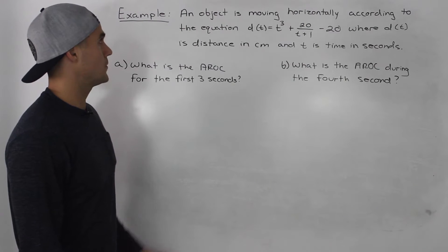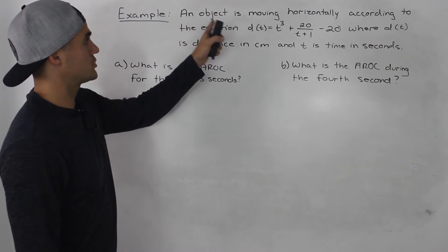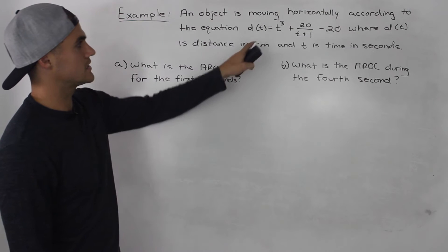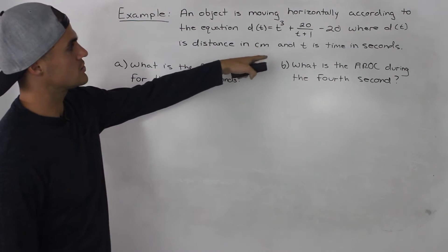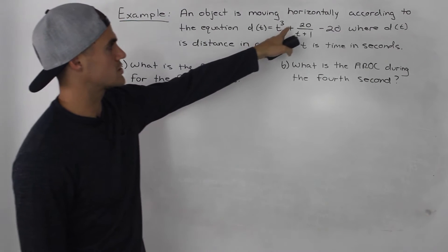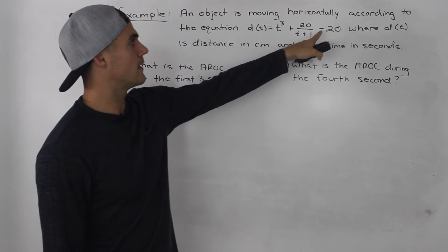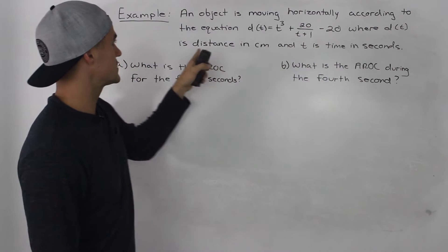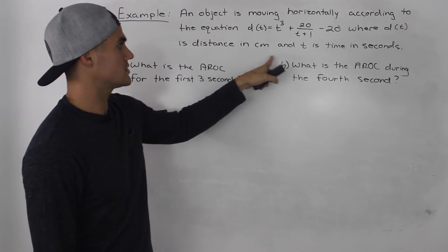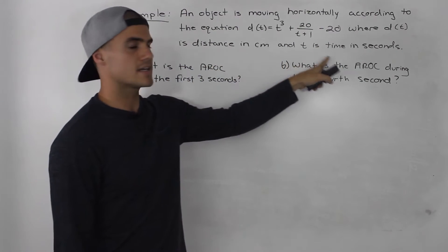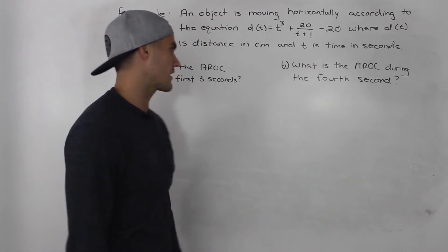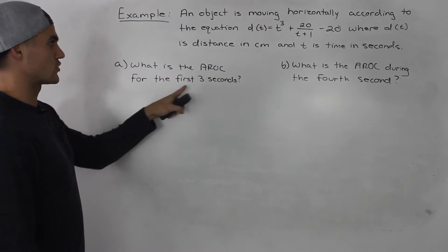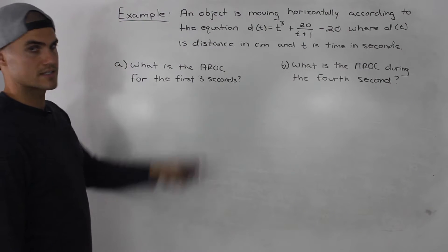Moving on to another example: an object is moving horizontally according to the equation d(t) = t³ + 20/(t+1) - 20, where d(t) is distance in centimeters and t is time in seconds. What is the average rate of change for the first three seconds?